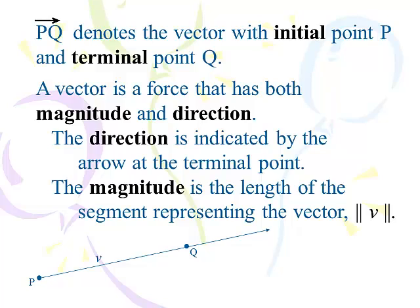A vector is a force. It has both a magnitude and direction. It's very important that you know that all vectors have two components: a magnitude and a direction. The direction is indicated by the arrow, and the magnitude is its length. The double bar notation on both sides means the magnitude of a vector. For direction, we'll normally use tangent to determine it.